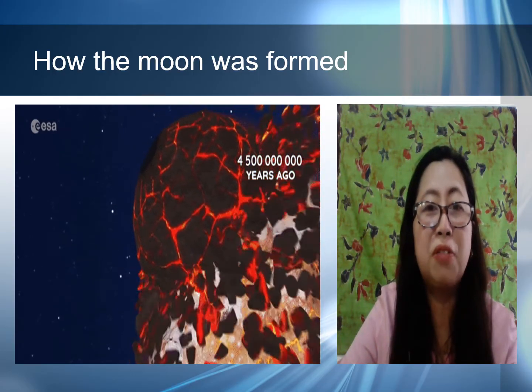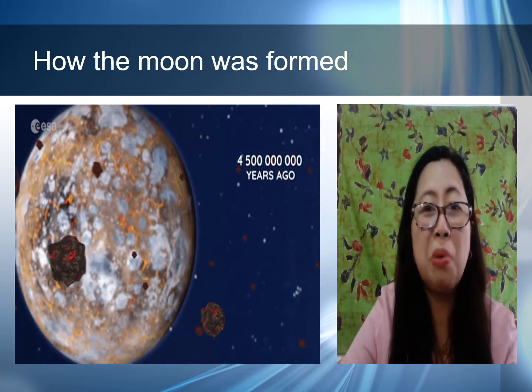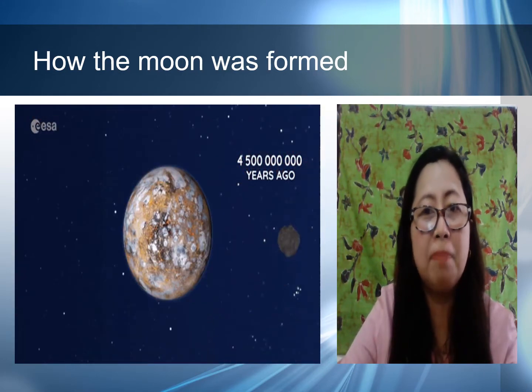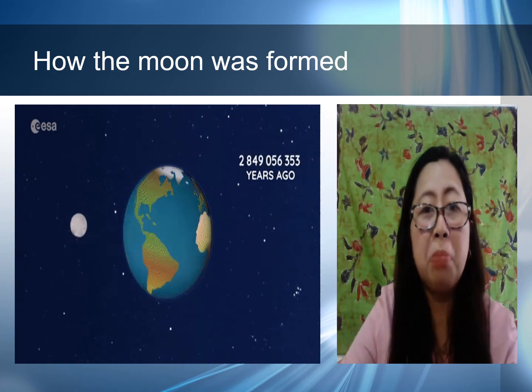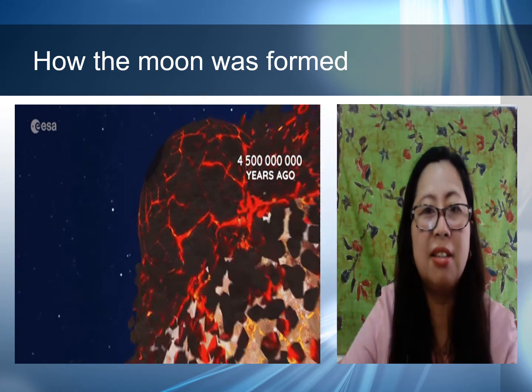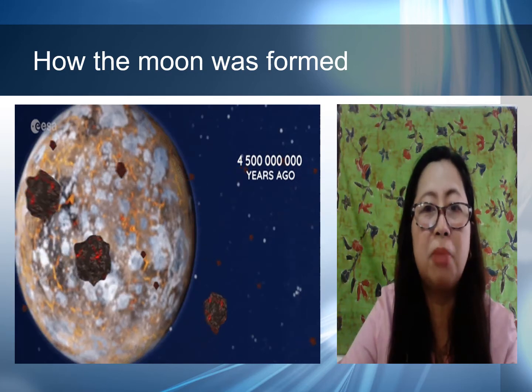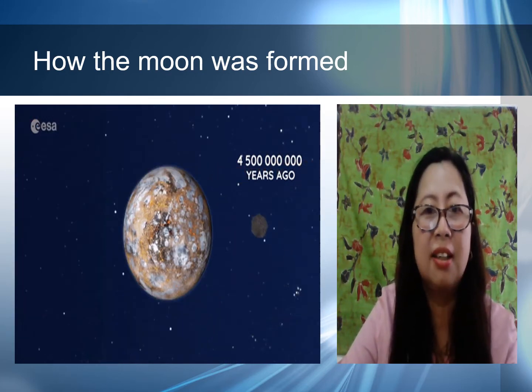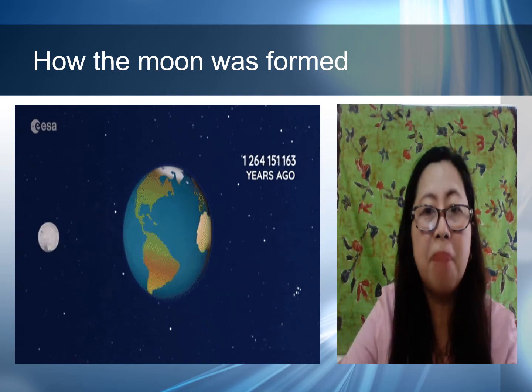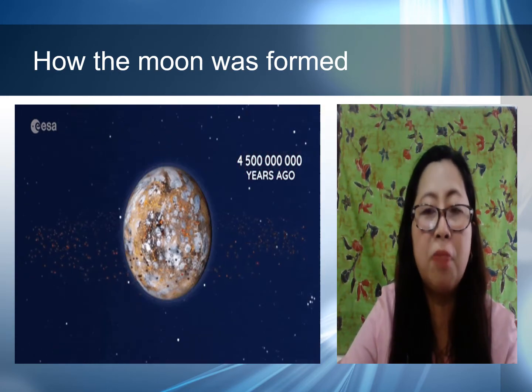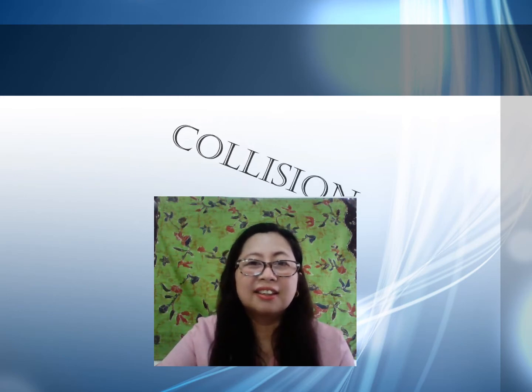Do you know how the moon was formed? What is most likely accepted today is the giant impact theory. It proposes that the moon formed during a collision between the earth and another small planet, about the size of Mars. The debris from this impact collected in an orbit around the earth to form a moon. Were you able to think of the word related to momentum while viewing the given examples? The correct answer is collision.